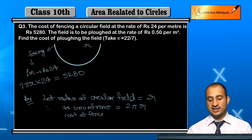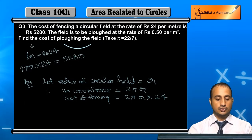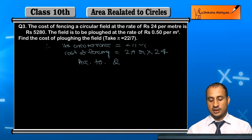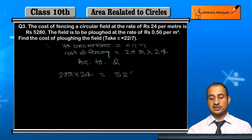The cost of fencing will be 2πr multiplied by 24. According to the question, 2πr into 24 equals the total cost of Rs 5,280.